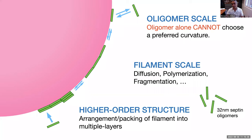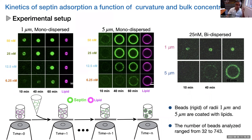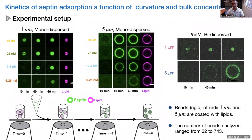Moving to the next scale involving filament formation and higher-order structures, we developed flow chambers where Amy Gladfelter's lab flows the septin cocktail through and observes absorption on beads as a function of time. We do this at different bulk concentrations and different bead sizes to study both curvature and concentration effects, and we do both monodispersed assays and bidispersed assays — one and five micron beads separately, and a combination.